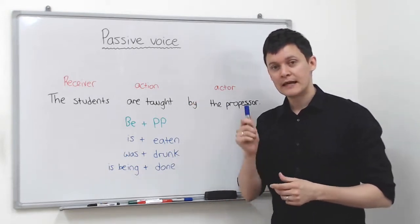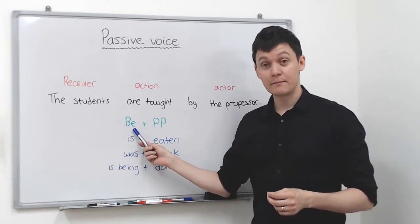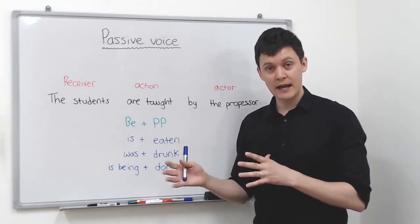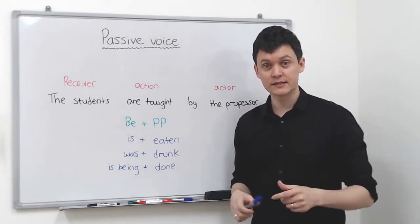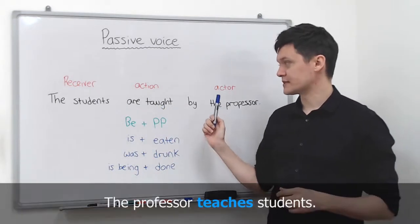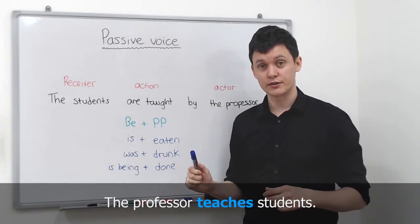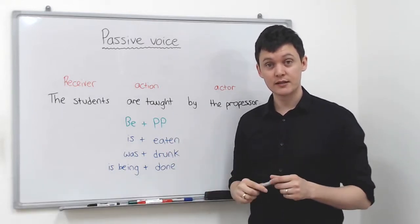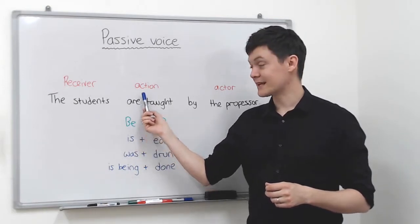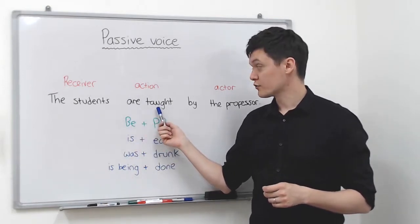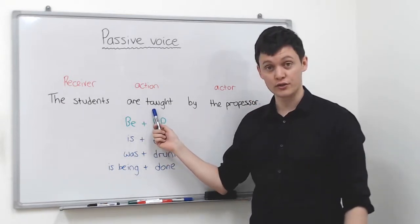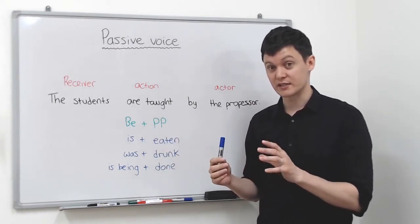You also need to always use the B verb, but the B verb changes depending on the tense of the sentence. In our first example we said the professor teaches students — teaches is the present simple, so this B verb must also be in the present simple, which is are. Taught is the past participle. So we combine that to make are taught. Let's look at some other examples because this is quite hard.